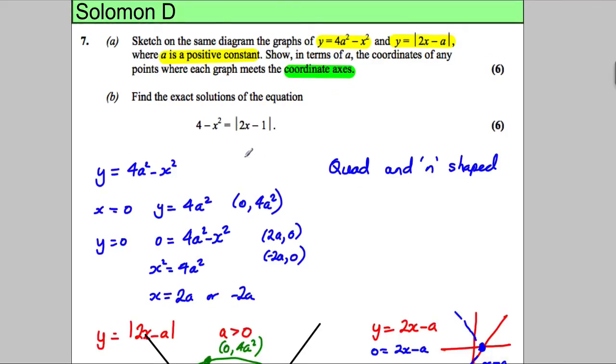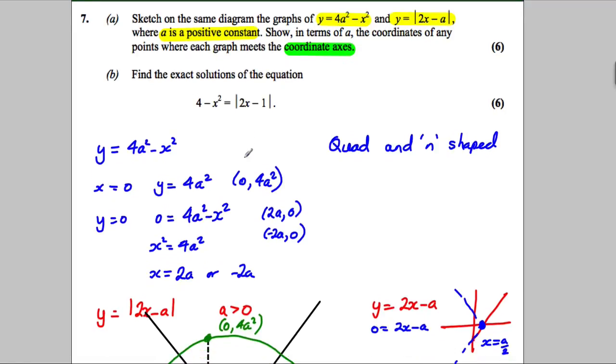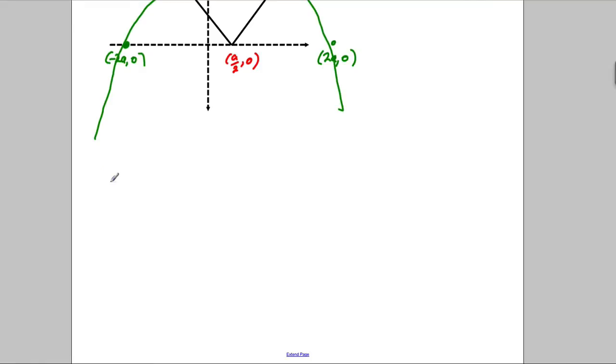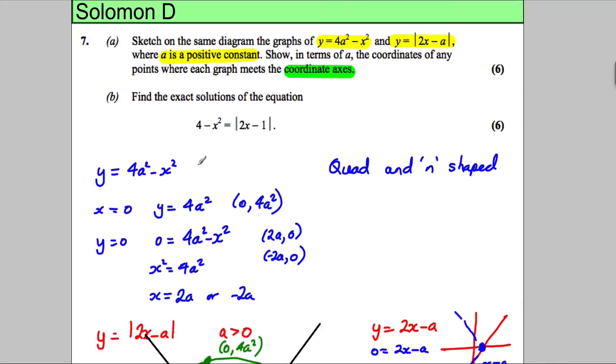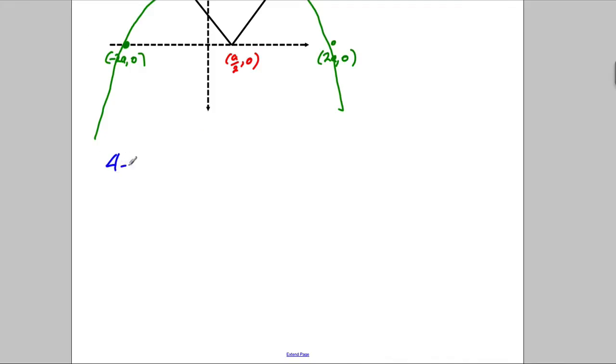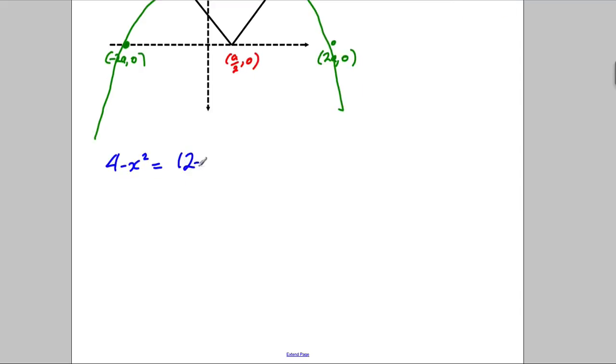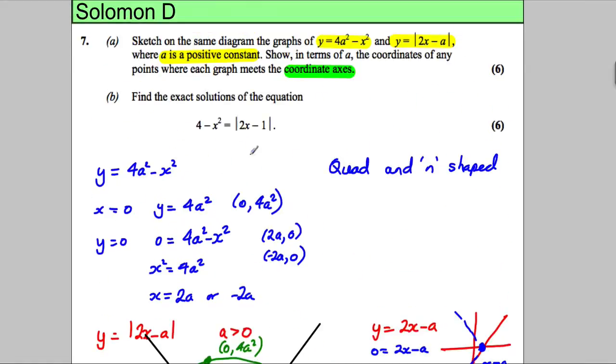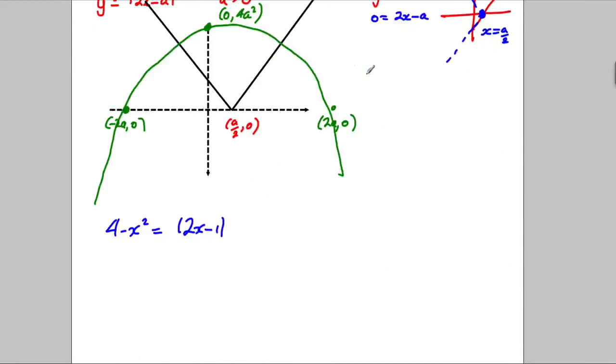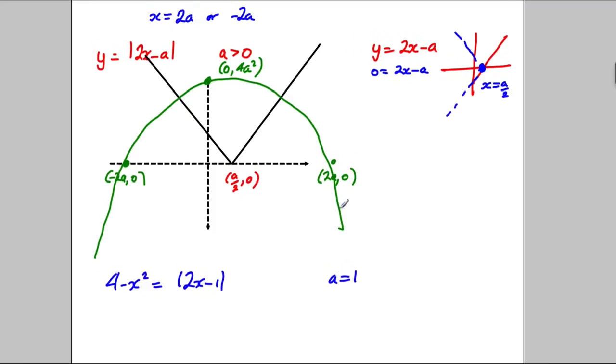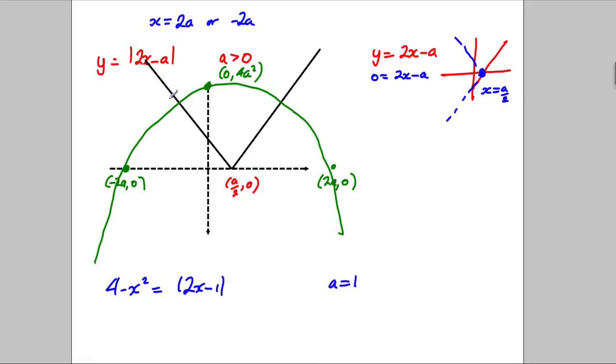And then it says, find the exact solutions of the following equation. Right, so clearly, if we're solving this equation, 4 subtract x squared equals the modulus of 2x subtract 1, it's very likely the graph we've drawn, apart from a has been chosen to be 1. So, a in this case is clearly going to be 1. So, we can see we're going to have two solutions, here and here.